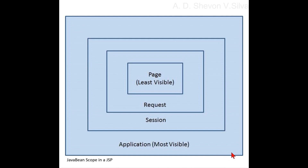The four scopes are: page, request, session, and application. We start with page, which is the least visible, going up to application, which is the most visible. You can look at the picture here — it shows how the scopes are arranged. Bean objects are only accessible in the scope that they were declared and created to be visible in. Let us look at these scopes in a little more detail.